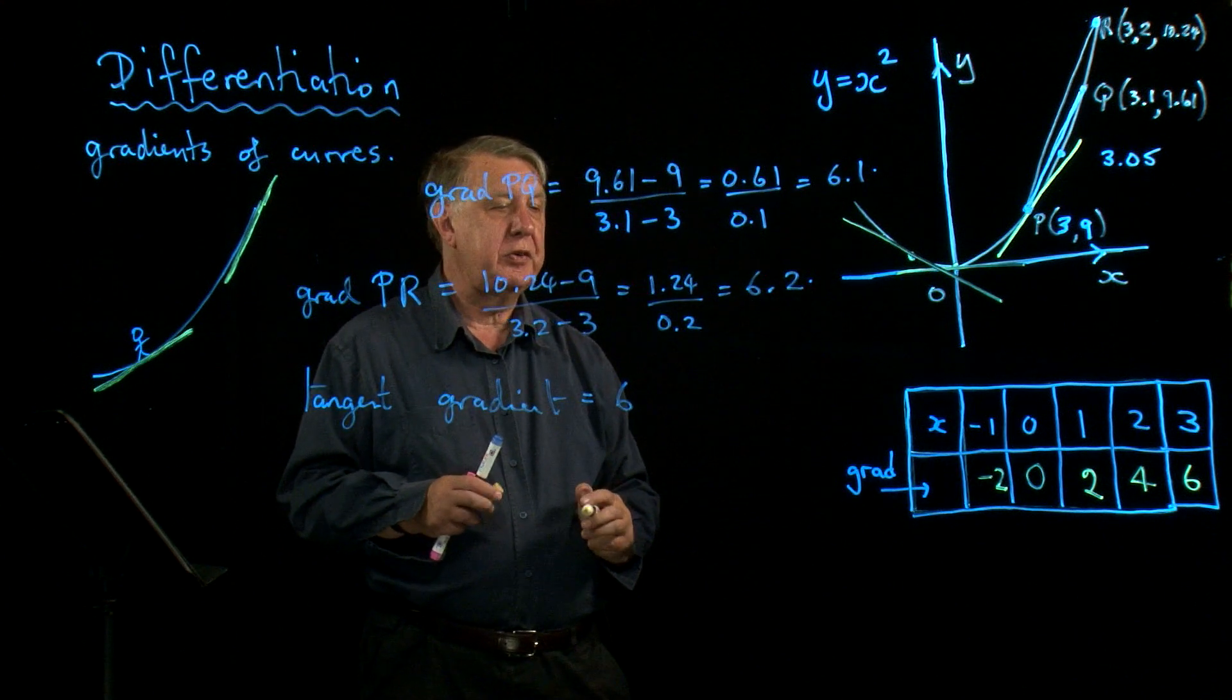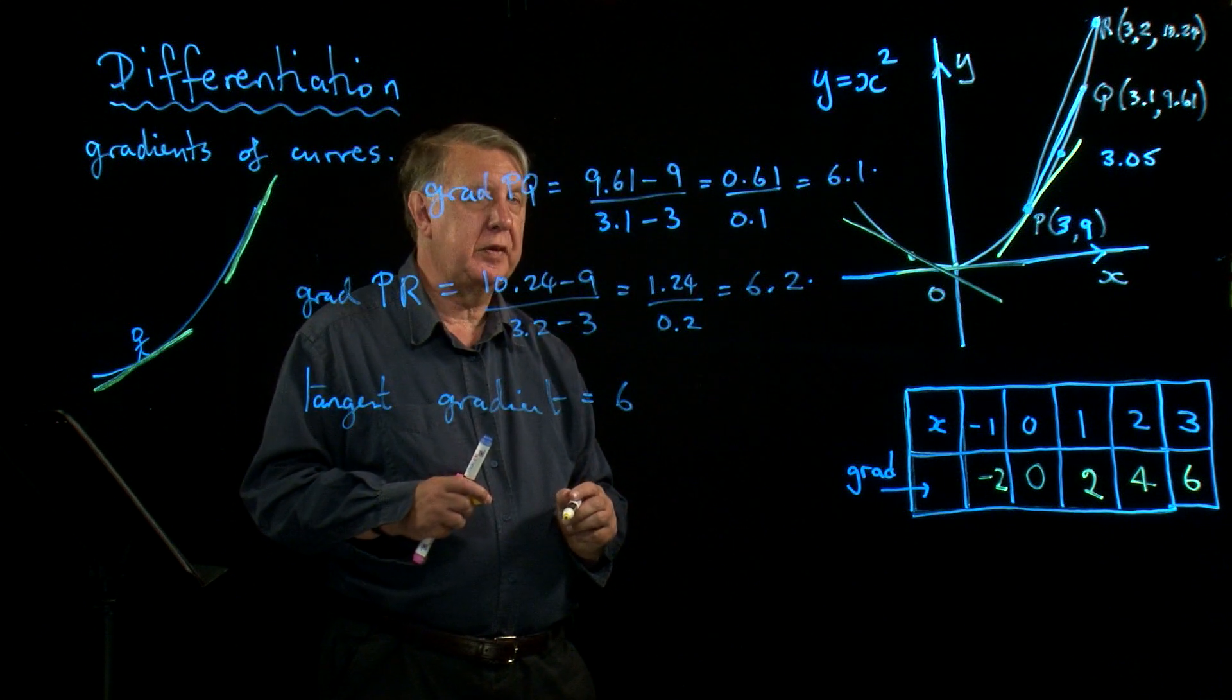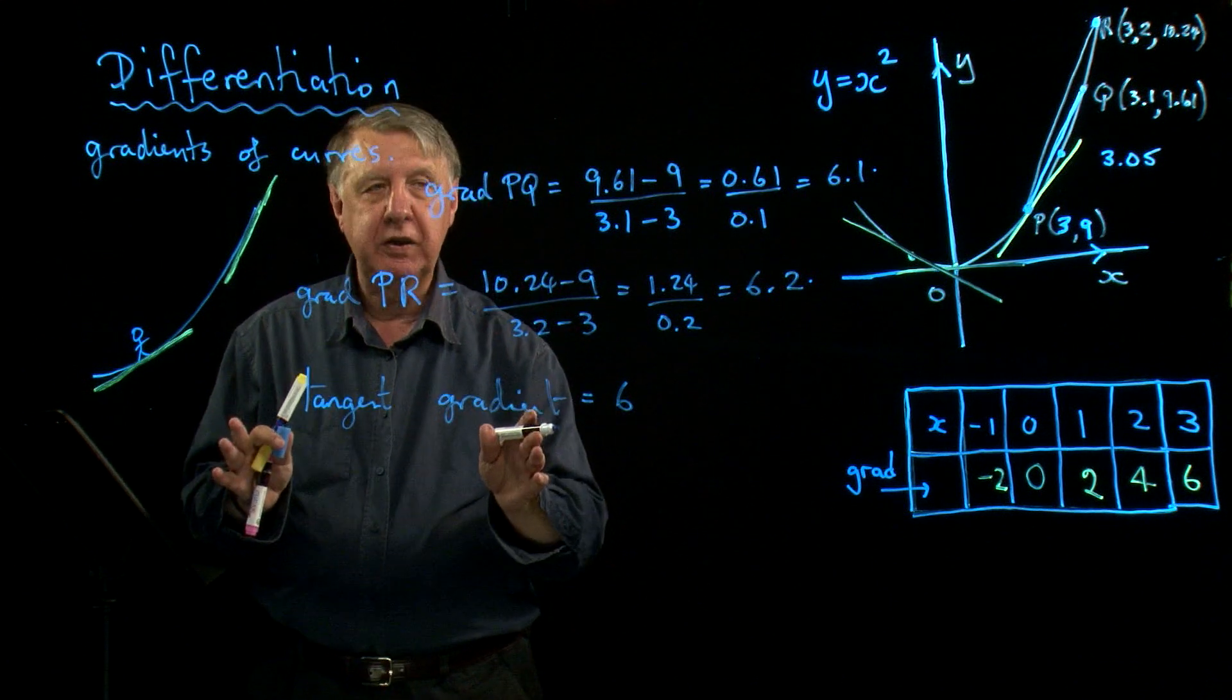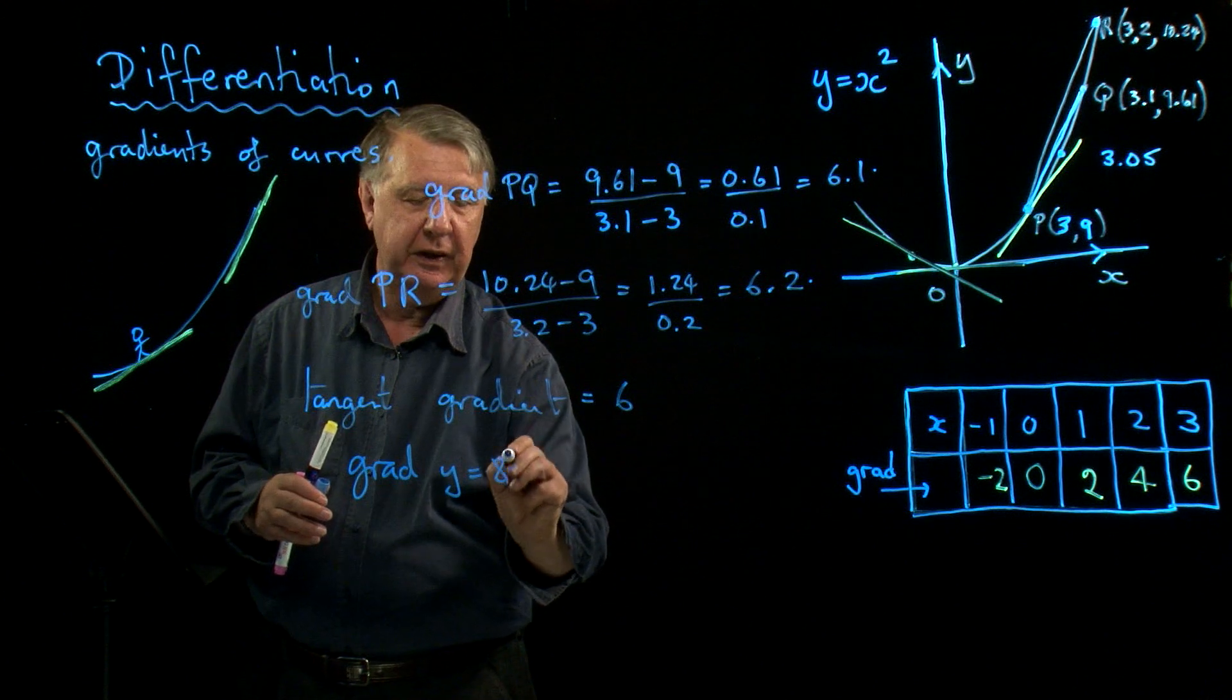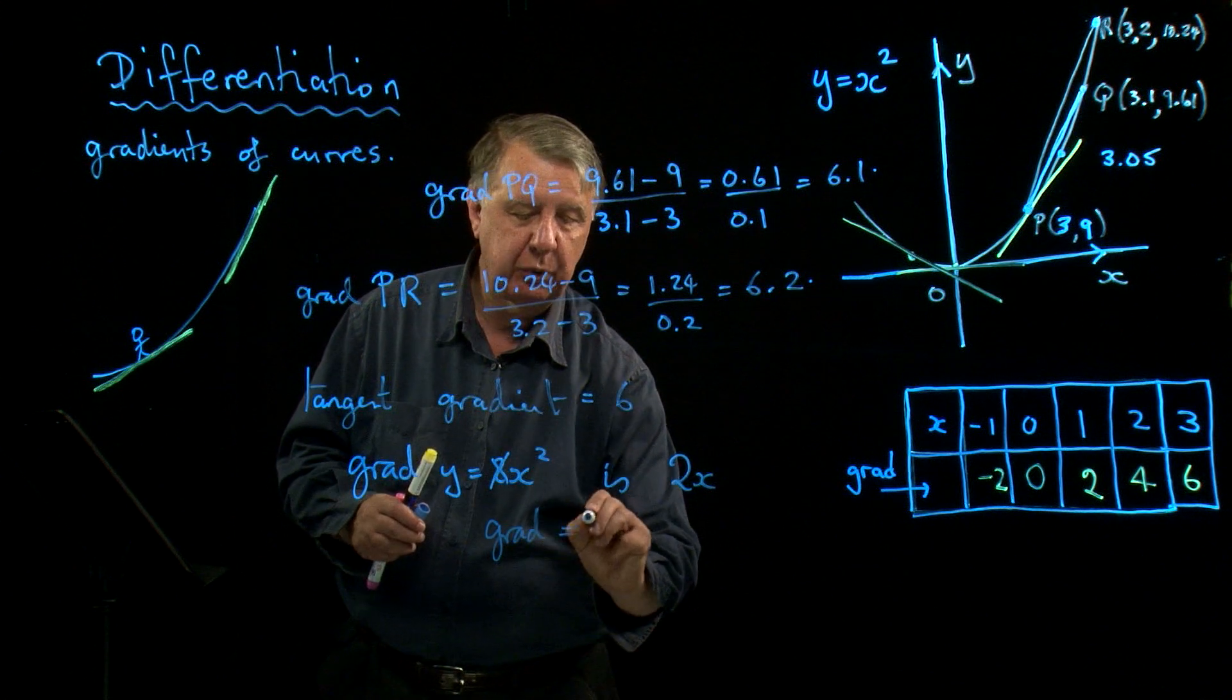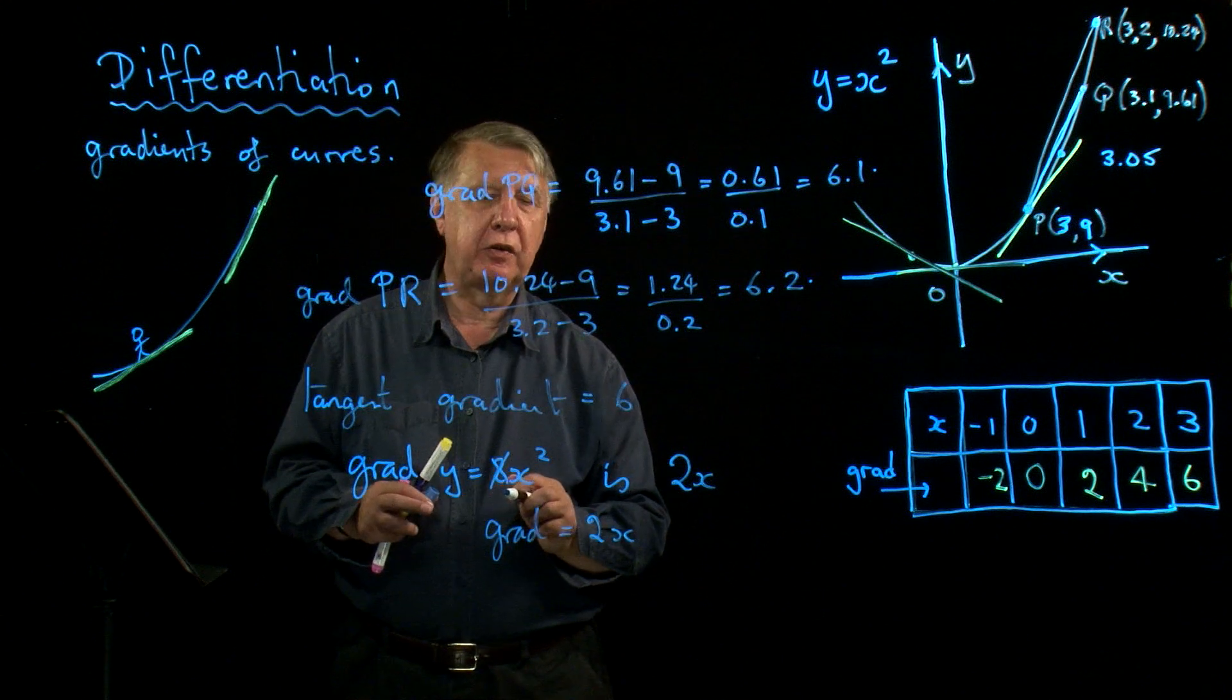Now look at those yellow numbers for a minute. Look at the x values. What do you notice? Well it's not difficult to see, is it, what's happening here, that the gradient is always double the x value. So this is not a proof, this is a demonstration. So it looks like then that the gradient of y equals x squared is 2x, or gradient equals 2x. We'll move on now and try this with a different graph and see what happens.